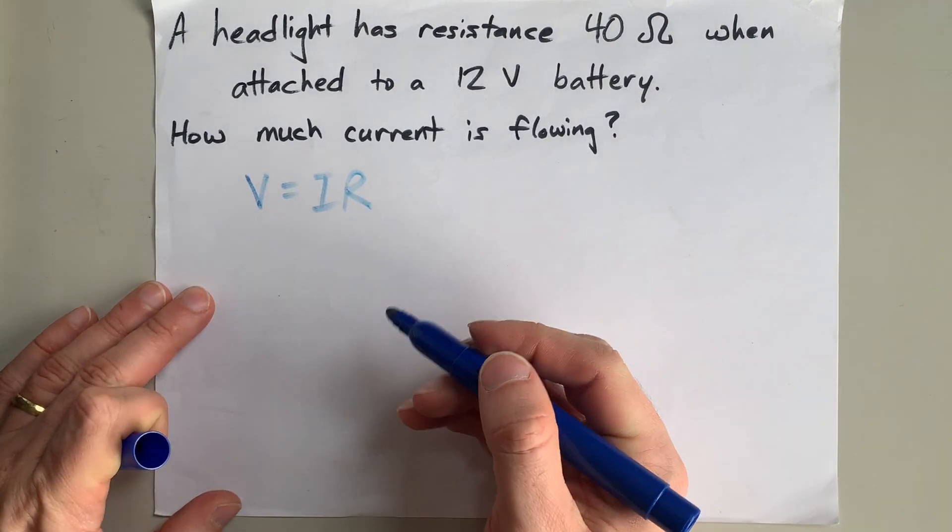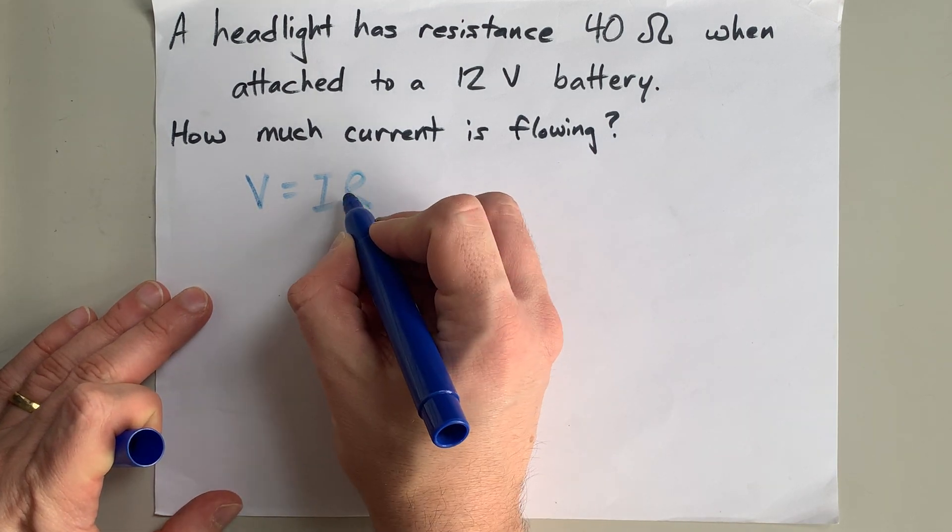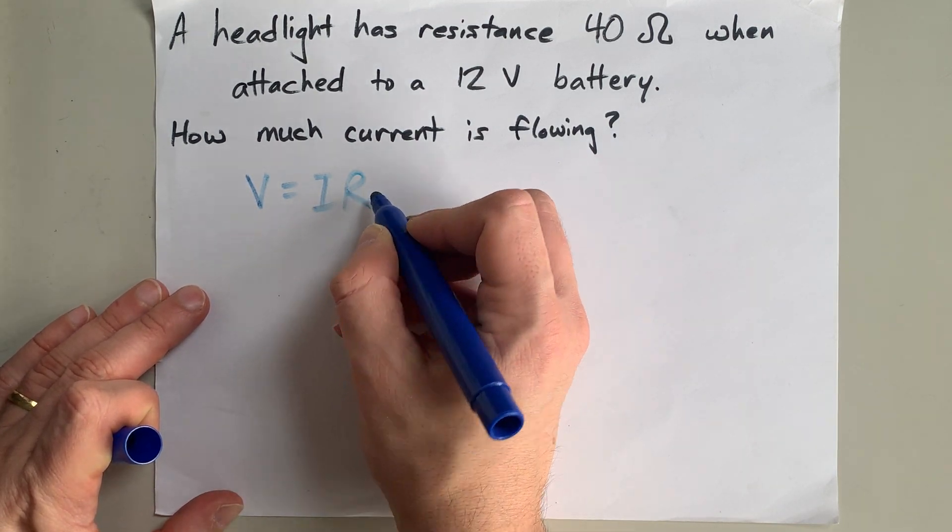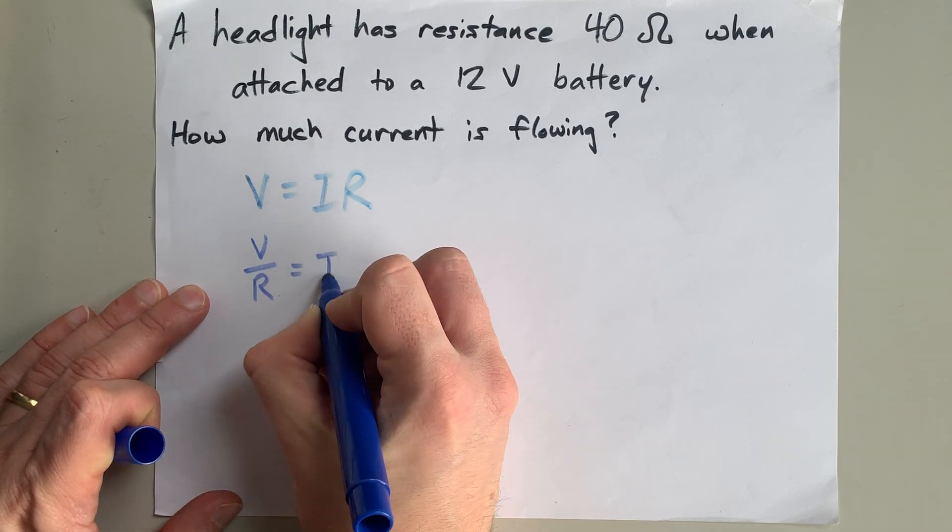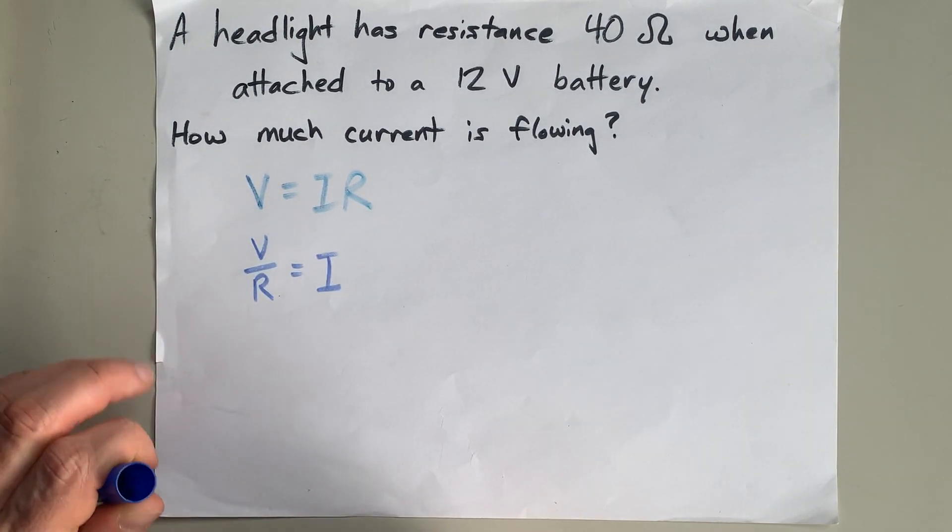We're solving for current, so we can undo this multiplication, current times resistance, by dividing it on the other side. That means current is voltage divided by resistance.